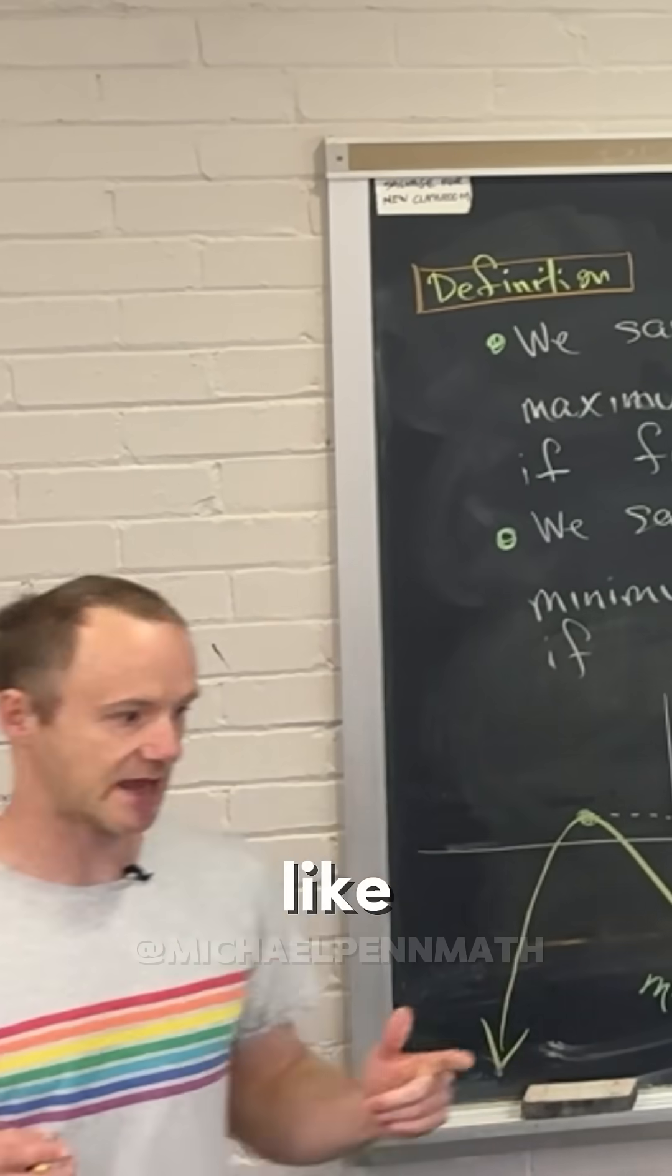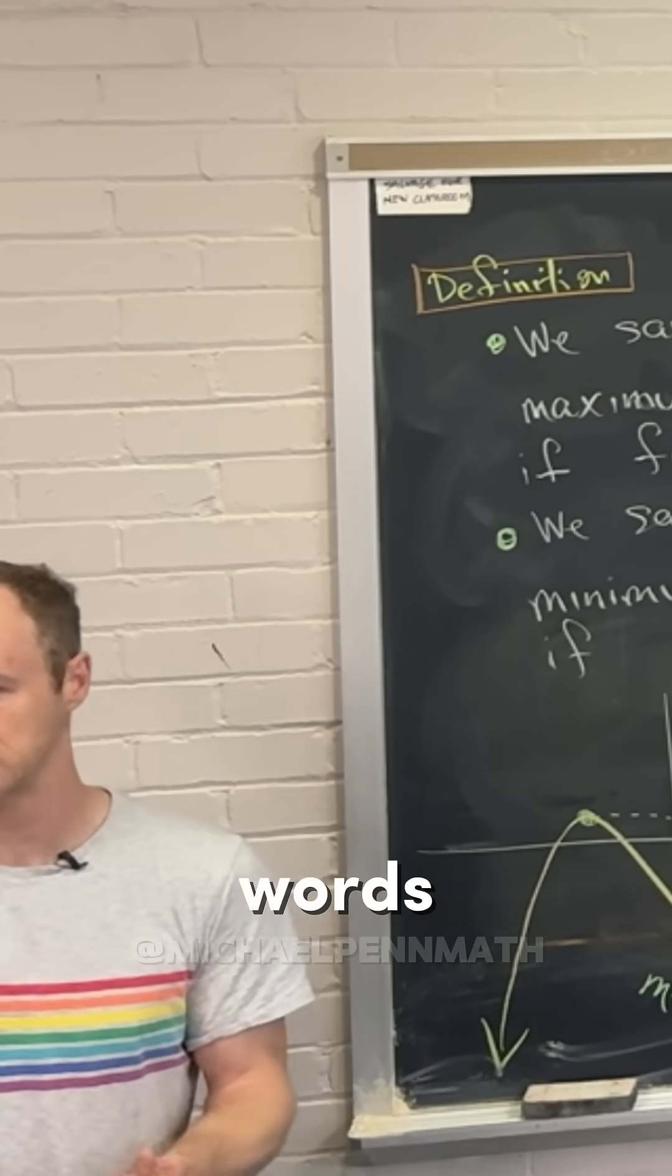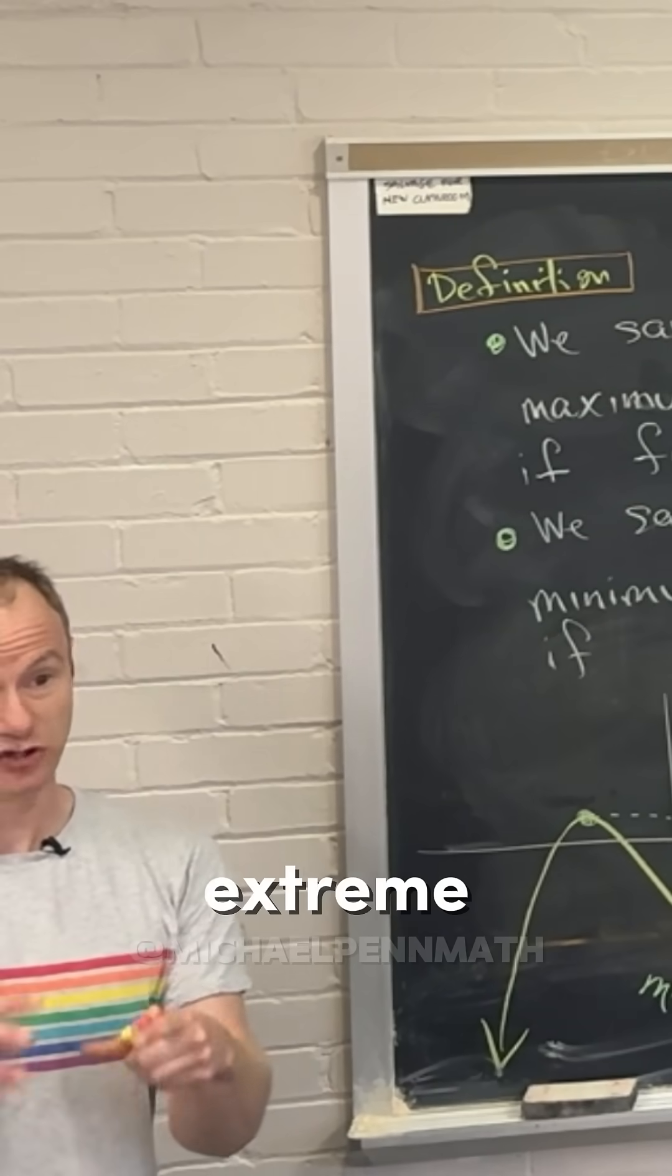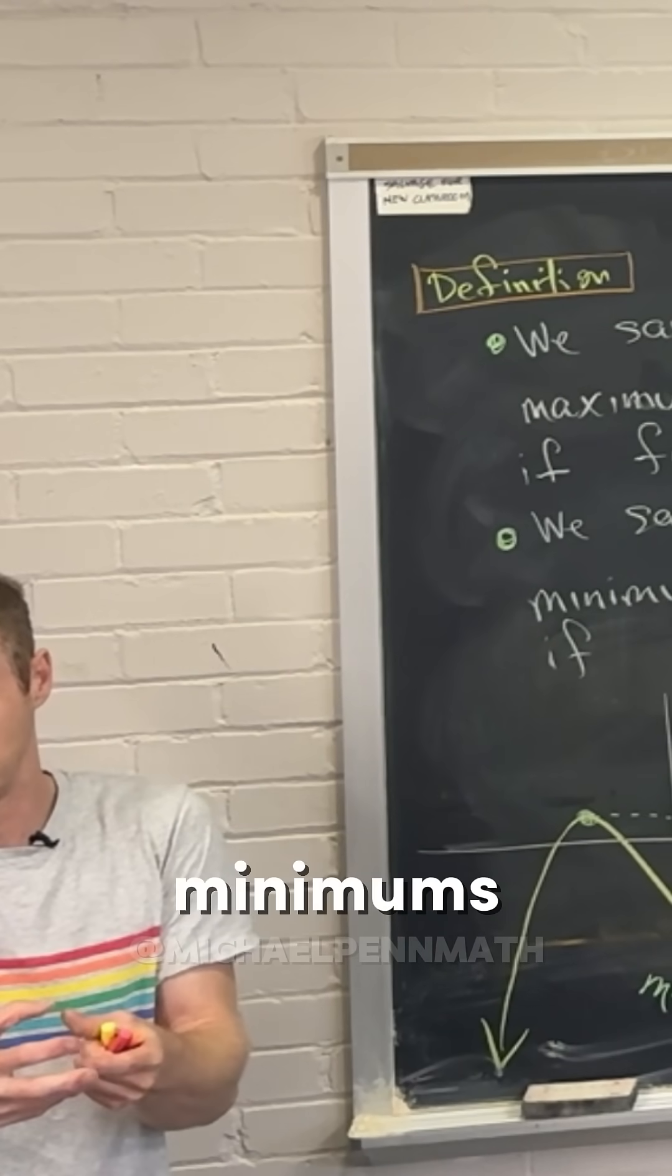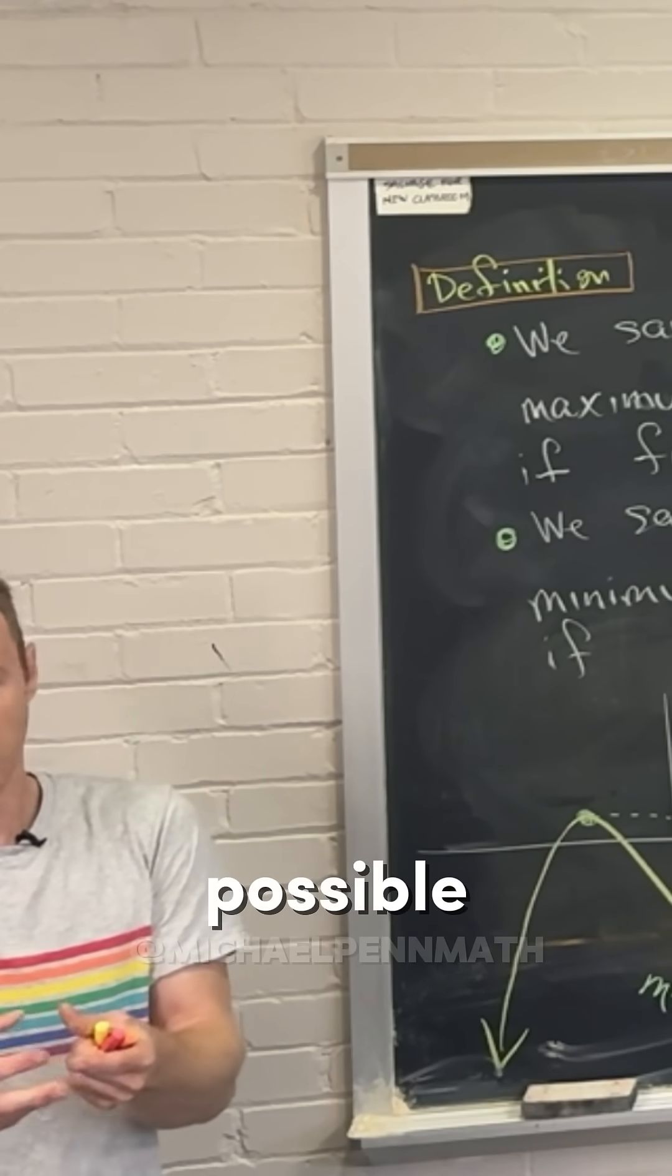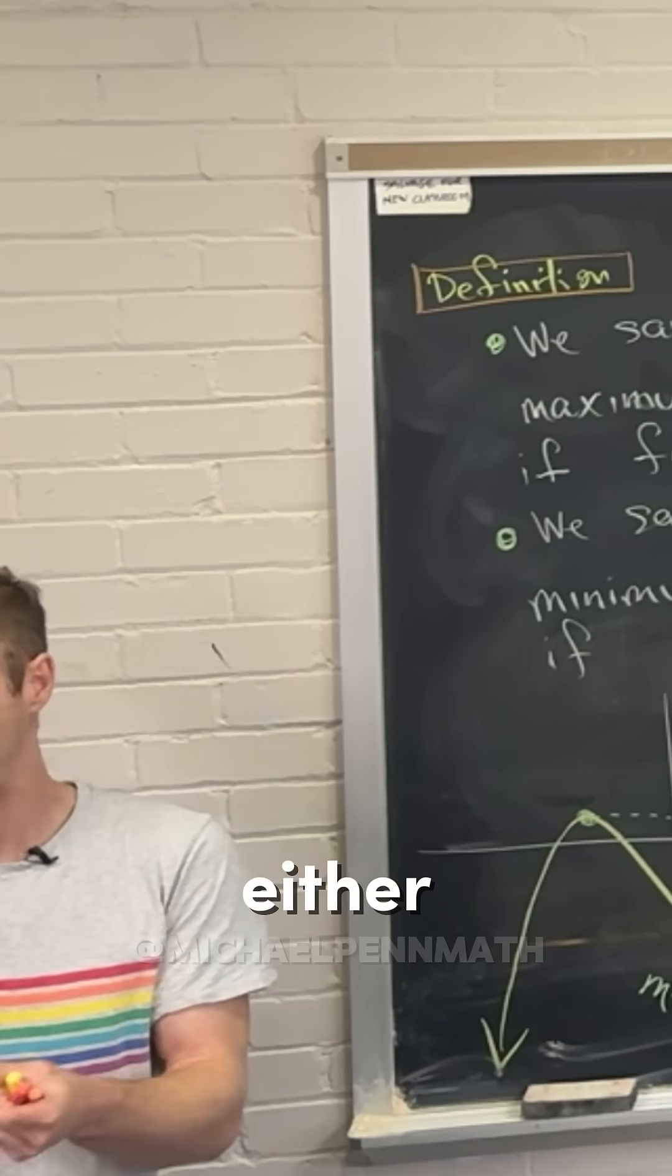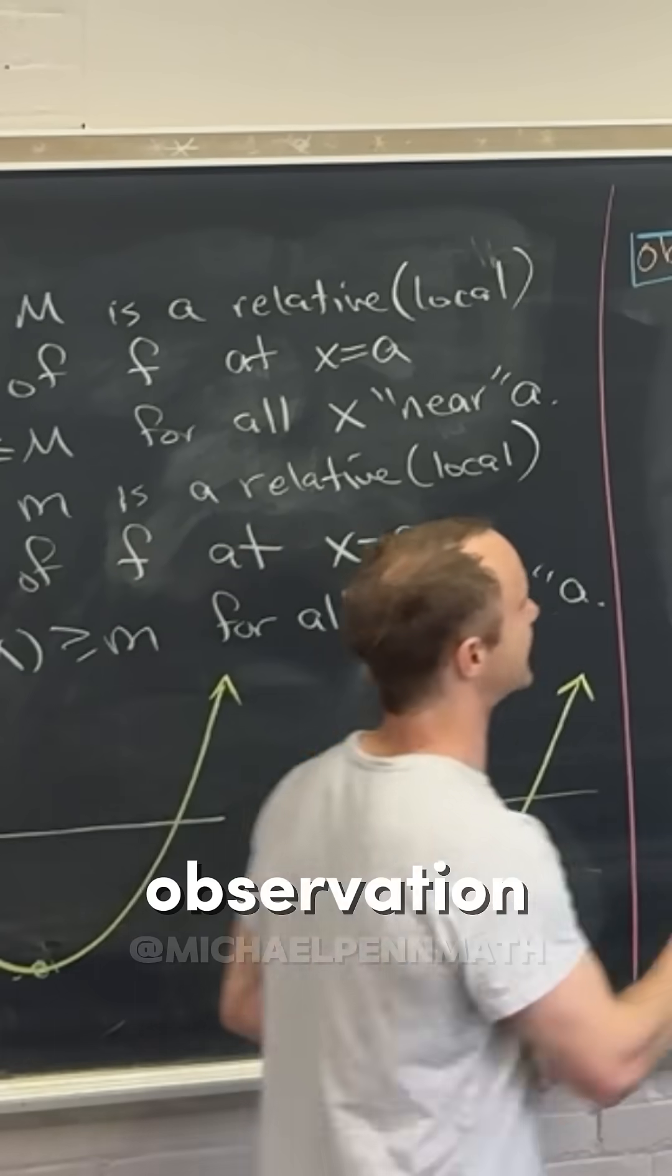So it looks like possible values of maximums and minimums - in other words, if we were to combine those ideas, possible extreme values. It would be reasonable to package together maximums and minimums into extreme values. Possible extreme values occur when the derivative either is equal to zero or does not exist. And so that is our observation.